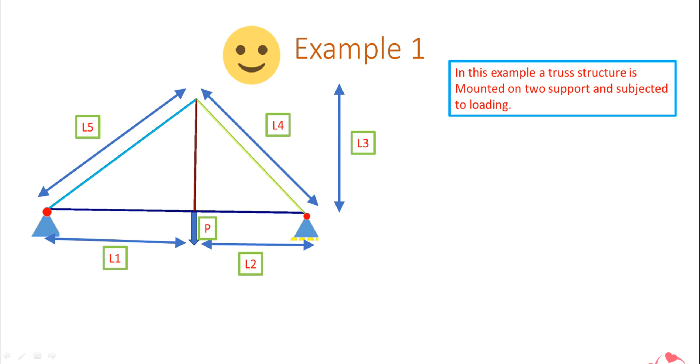In this example, a truss structure is mounted onto supports and subjected to loading. How many constraints are there? There are two constraints. One is a pin joint that can't move in both directions, so it will have a reaction force. These are the reaction forces of the pin joint: one in the horizontal direction and one in the vertical direction. If you want to remember this, just assume yourself as a pin joint and there's a ball in front of you.